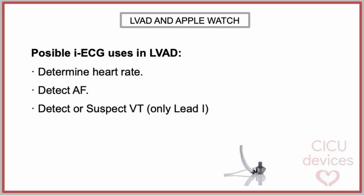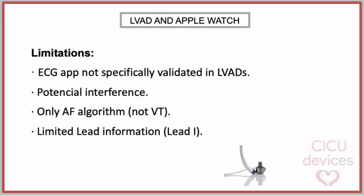The latter use has the limitation that only lead one is available for making the diagnosis. We must remember certain limitations: the Apple Watch ECG app was not specifically designed or validated for use in patients with left ventricular assist devices. There is potential interference due to the electrical activity of the LVAD affecting its accuracy. The ECG app only includes an atrial fibrillation algorithm, with no algorithm available for ventricular tachycardia, and it offers limited lead information. The single-lead ECG from the Apple Watch corresponds with lead one and provides less comprehensive information compared to a standard 12-lead ECG.